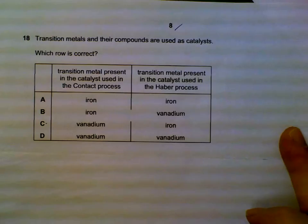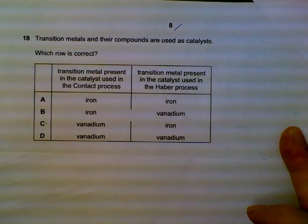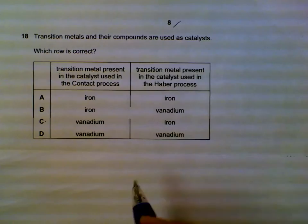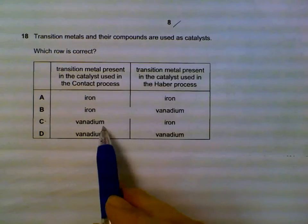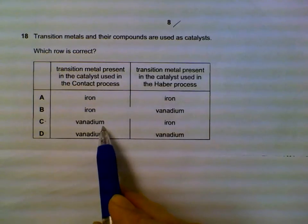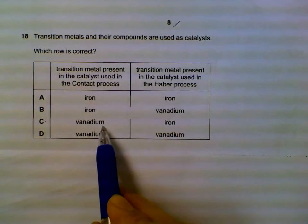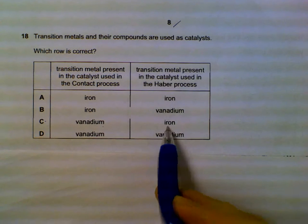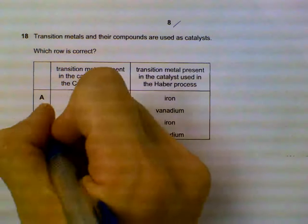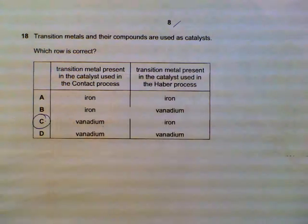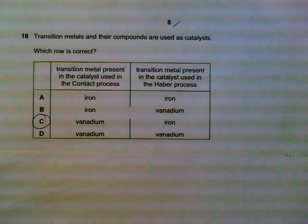Question 18: uses of transition metals — again, this is a recall question. Vanadium(V) oxide (V₂O₅) is used as a catalyst in the Contact process. Iron is used as the catalyst in the Haber process.